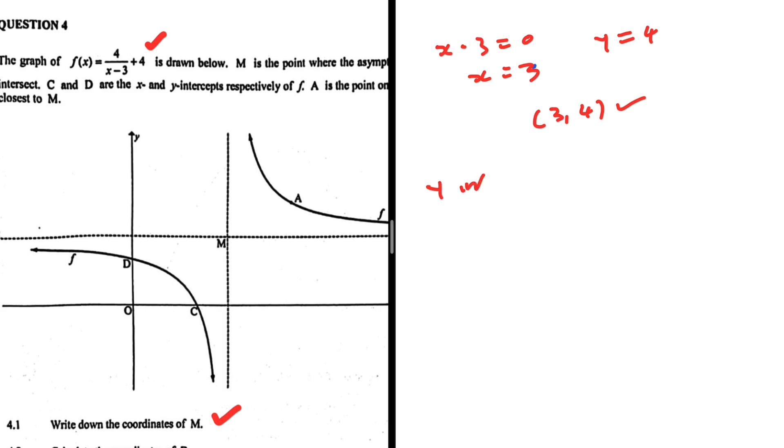So we have f(0), meaning equals to 4 divided by 0 minus 3 plus 4. So this is 4 divided by minus 3 plus 4. Let me put that in my calculator. This equals to 8 over 3.